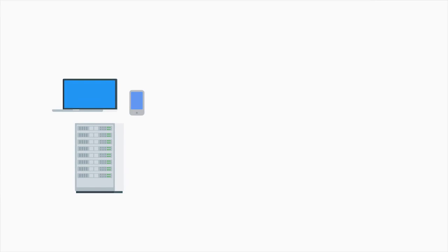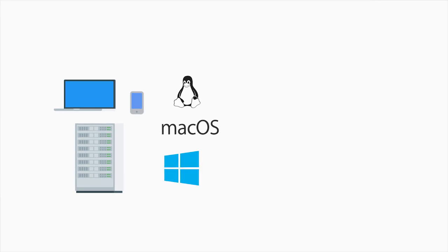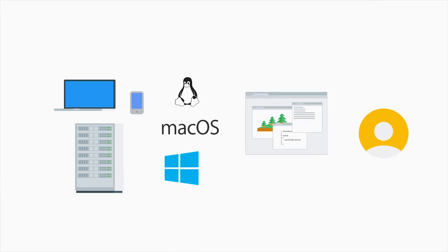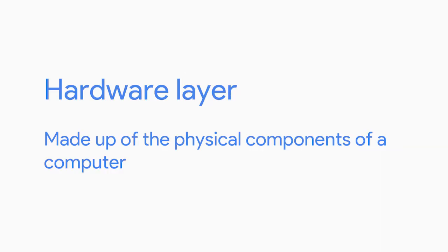For the rest of this course, we'll deep dive into the layers of computer architecture and learn all the parts that make up a computer. A computer can be broken into four main layers: hardware, operating system, software, and users.